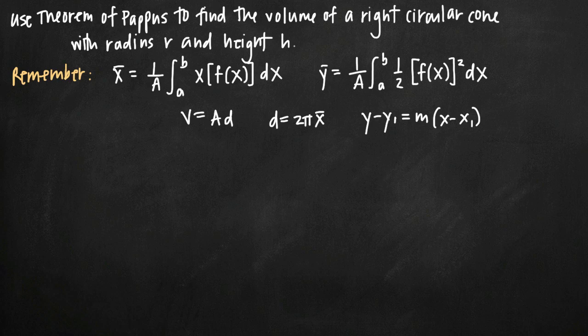Today we're going to be talking about how to use the theorem of Pappus to find the volume of a right circular cone with radius r and height h. The theorem of Pappus tells us that the volume of an object is equal to the area of one of its plane regions, or a cross-section of the object, times the distance traveled by the centroid of the plane region.